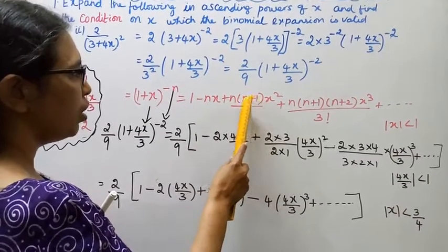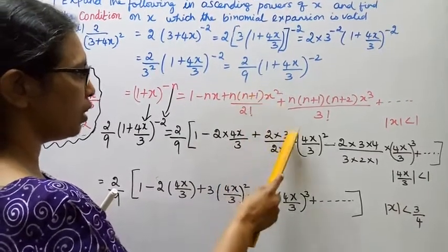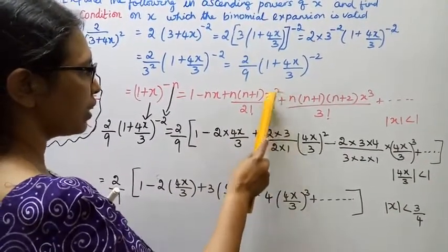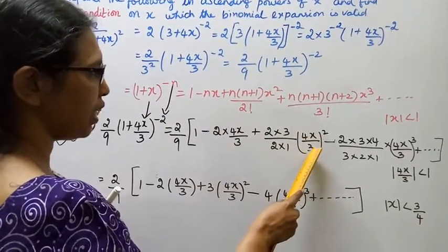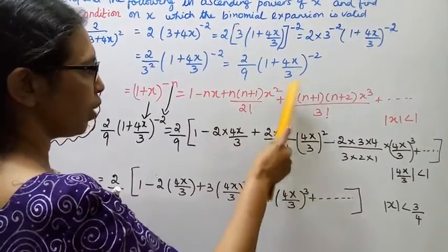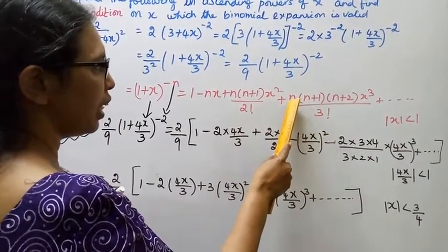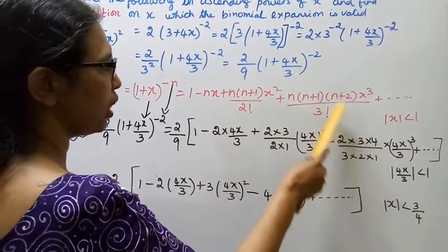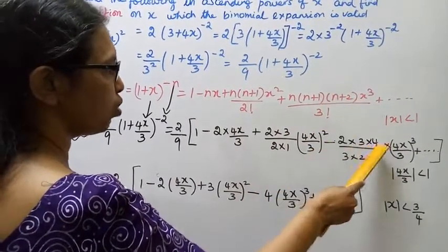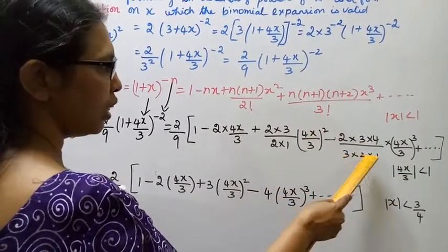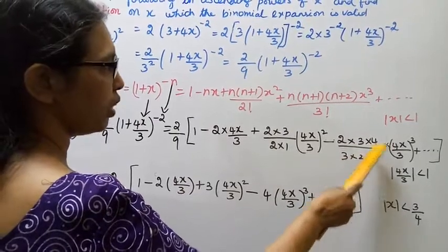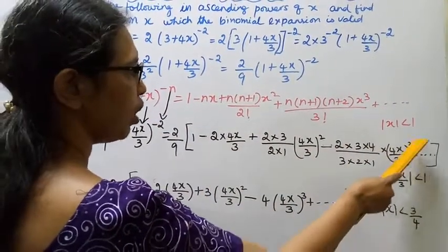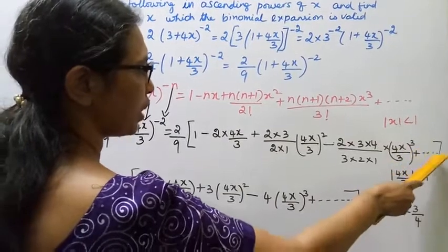Substituting x = 4x/3 and n = 2: the terms become 1 − 2(4x/3) + [2×3/2!](4x/3)² − [2×3×4/3!](4x/3)³ + etc. That is: n+1 = 3, 2! = 2×1; next term n+2 = 4, 3! = 3×2×1, and x = (4x/3) cubed, etcetera.